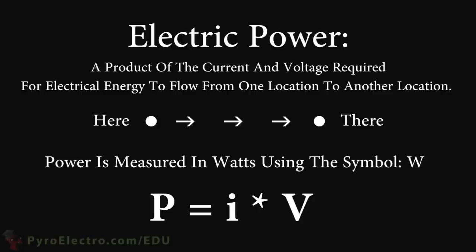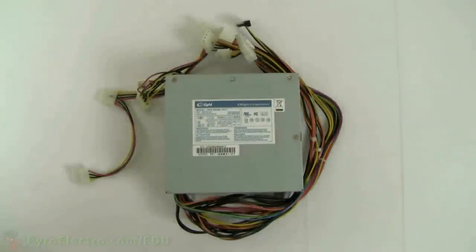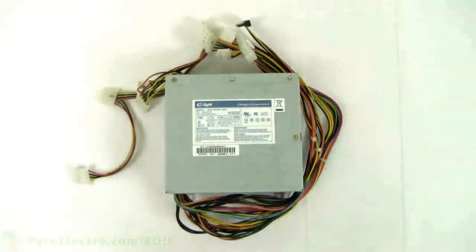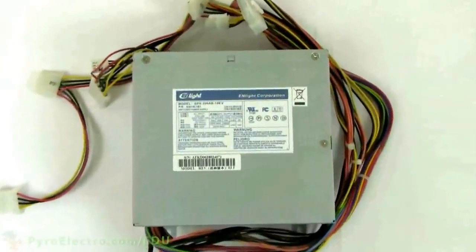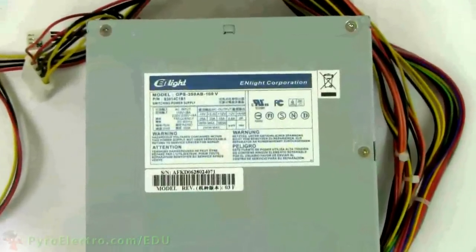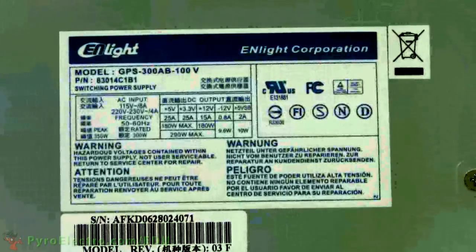Electrical power, measured in watts, is a product of the voltage and current properties. We use the electrical power property of electricity to know how much energy a device can generate or how much energy a device needs to operate. For example, a 60-watt light bulb uses 60 watts to light up a room, or this 350-watt power supply can generate 350 watts for your desktop computer.